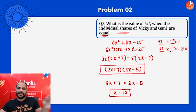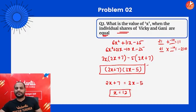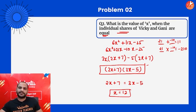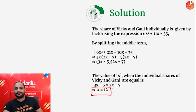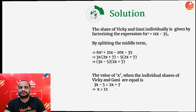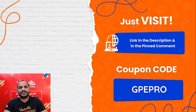Verification: when x = 12, 2(12) + 7 = 31 and 3(12) - 5 = 31. Both shares are equal at 31, confirming x = 12 is the correct answer.